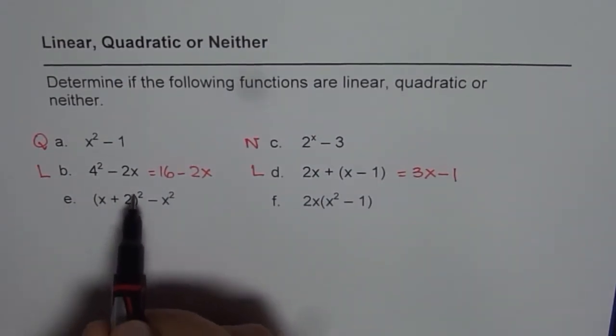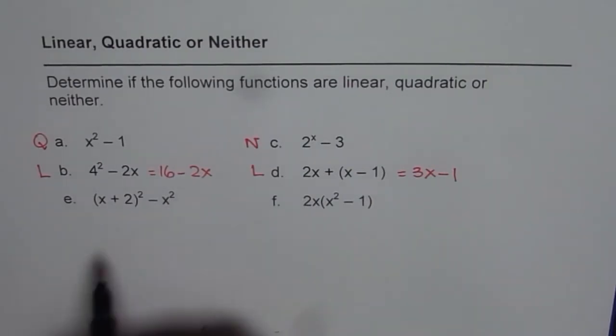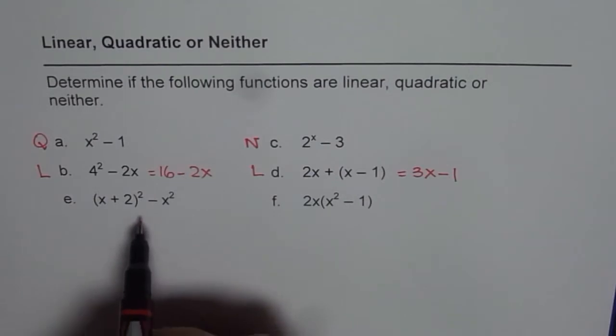E and F are kind of critical. E: (x + 2)² - x². x square, here also square. It seems to be a quadratic function, but let us expand and check.